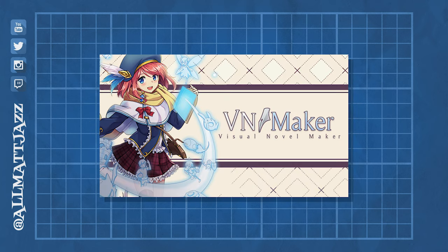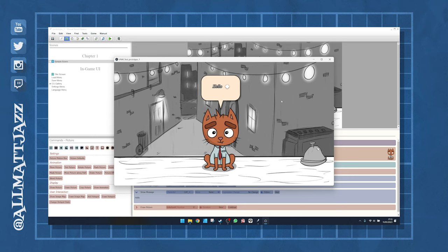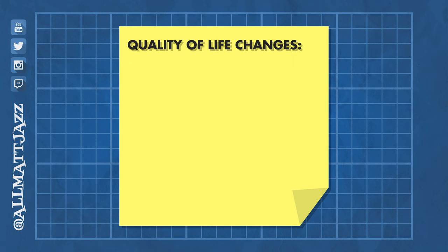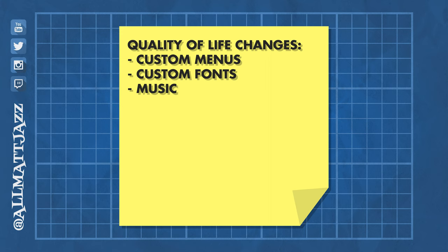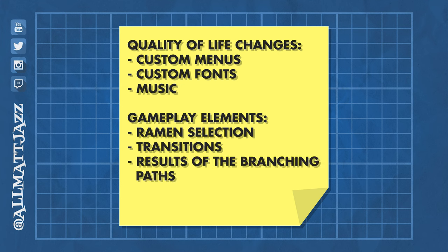Today is devlog number three, in which we're going to be polishing the prototype. In the last devlog we chose a game engine and created a very simple scene with background, characters, speech bubble and text. The next step is to take this initial concept and polish it into something that would resemble the final product. I wrote out a list of quality-of-life things: custom menus, custom fonts, adding music, and essentially adding the gameplay elements — the ramen selection, transitions between these, and the results of the branching paths.